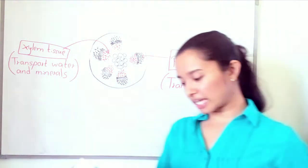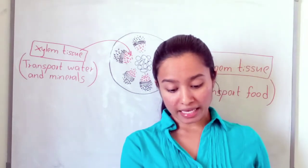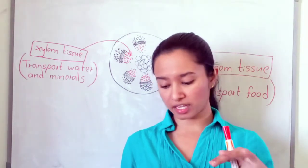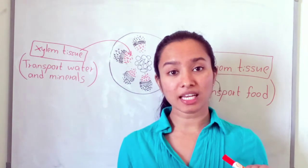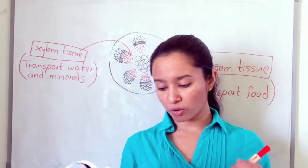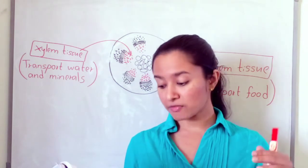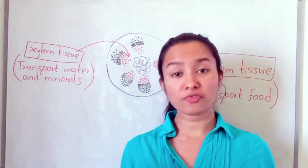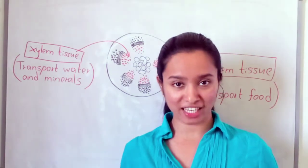Now we have to do Activity 12.5. Here, we have to observe the cross-section of a plant leaf using a permanent slide. We can see different types of tissues in the plant leaf.